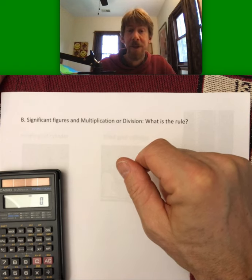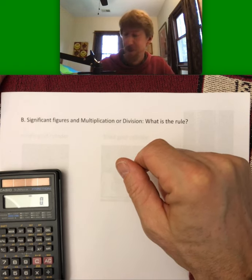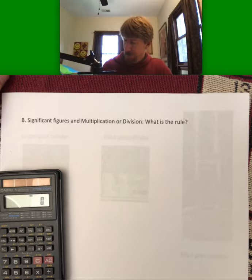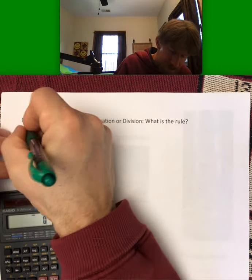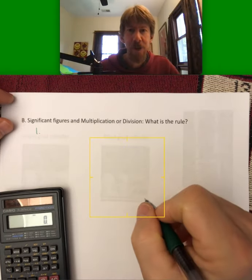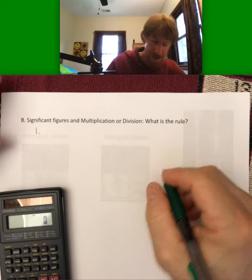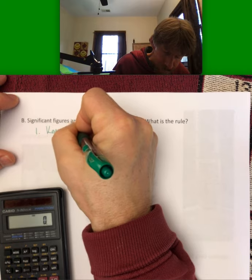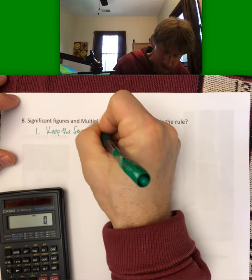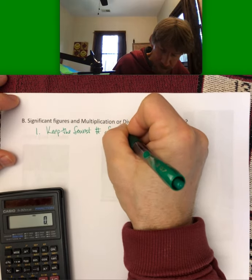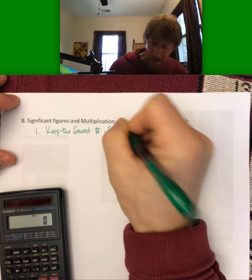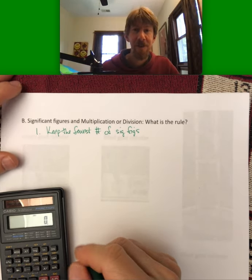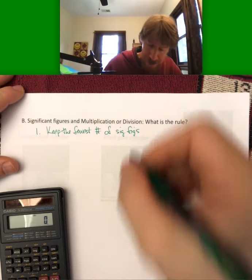Let's talk about significant figures and multiplication or division. What is the rule? Keep the fewest number of significant figures in the calculation.